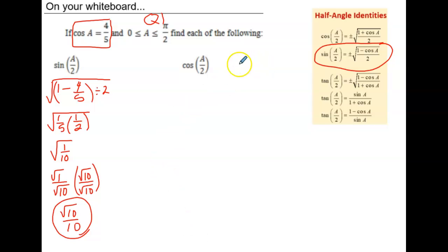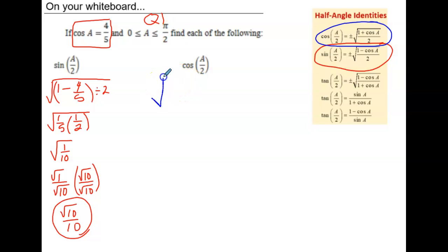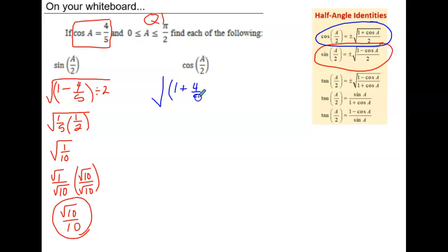For the cosine of a over 2, we're using our half angle identity for cosine — again, the positive square root because we're in quadrant 1. So we have the square root of the quantity 1 plus the cosine of a, where cosine of a is 4 fifths, and that is divided by 2.